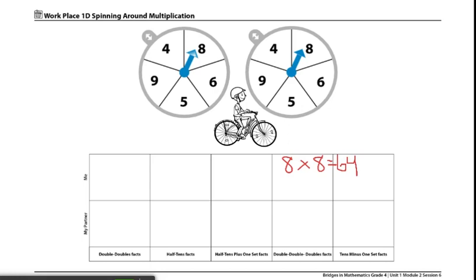This is the end of the directions for the workplace Spinning Around Multiplication. If you'd like to try different variations of this game, you can play more than one fact per column, so have two per column each time.